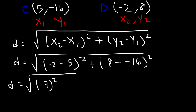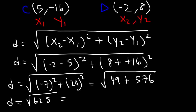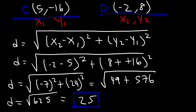Negative 2 minus 5 is negative 7, and 8 minus negative 16 — because we have two negative signs, we can make it positive — so 8 plus 16 is 24. Negative 7 squared is positive 49, and 24 times 24 is 576. Adding 576 and 49 gives 625. The square root of 625 is 25, so the distance between points C and D is 25 units.